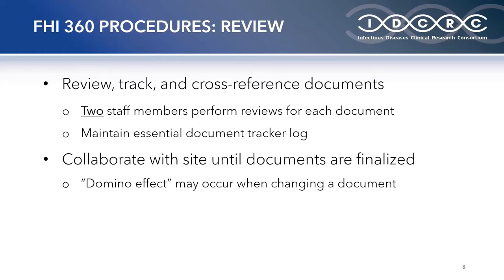When reviewing, once we receive the documents, FHI reviews each one individually, tracks it, and cross-references it. We have two different reviewers look over each document, all while adhering to DMID regulatory guidelines. Review dates and notes are manually entered and tracked in our essential document tracker logs, which we create and modify for each protocol. Cross-referencing is key when reviewing all documentation — it's how we ensure compliance and accuracy. If there are any discrepancies, FHI will reach out to the site, and the reason for resubmission will be noted. Sometimes a domino effect occurs — if one document changes, other documentation will likely need resubmission as well.